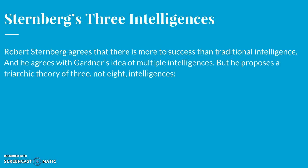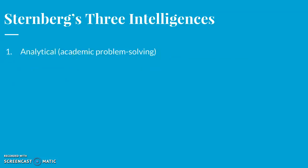Robert Sternberg agrees that there is more to success than traditional intelligence and agrees with Gardner's idea of multiple intelligences, but he proposes a triarchic theory of three — not eight — intelligences. The first is analytical, or academic problem solving, assessed by intelligence tests which present well-defined problems with a single right answer. Such tests predict school grades reasonably well and vocational success more modestly.